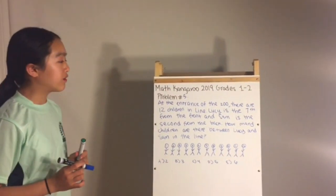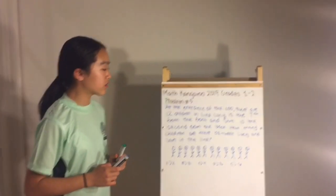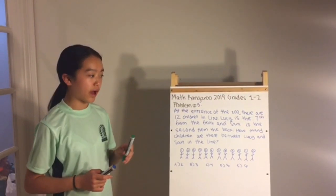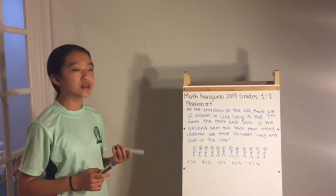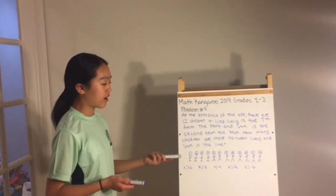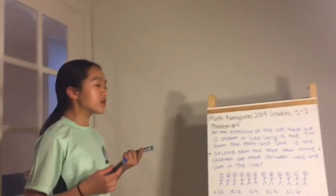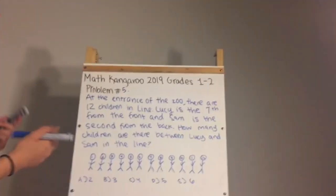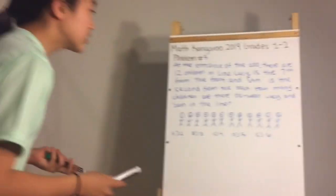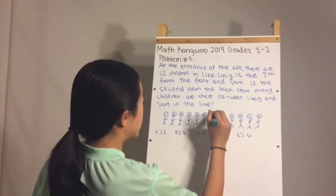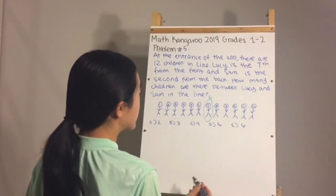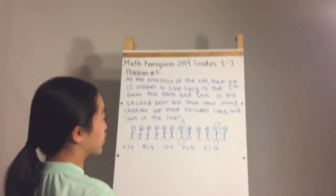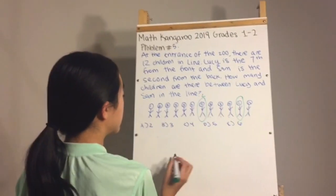Problem number five: at the entrance of the zoo there are 12 children in line. Lucy is seventh from the front and Sam is second from the back. Label all positions in the line — Lucy is at position 7 and Sam is at position 11. Count the children between them: 1, 2, 3. The answer is B.